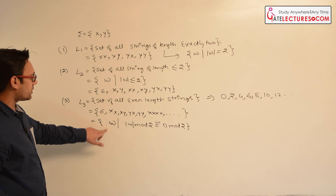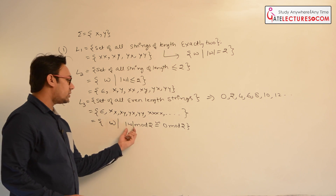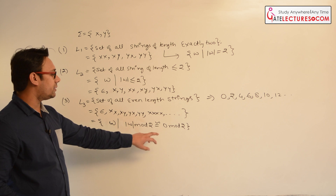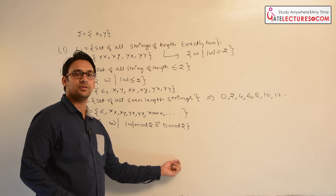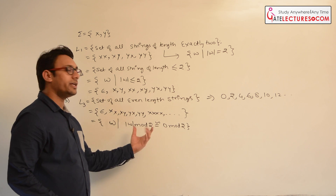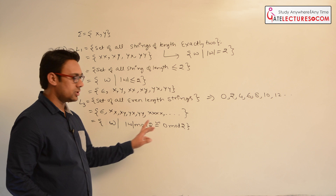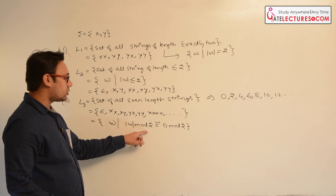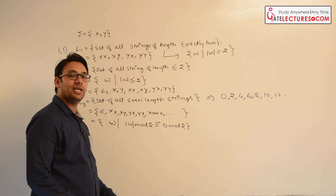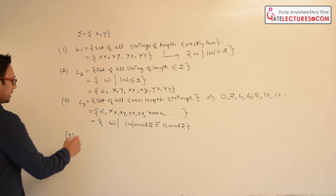What does this mean? It means the string w is such that if we divide the length of w by 2, the remainder we get is congruent to 0. So length of w mod 2 should be equivalent to 0 — meaning even length strings — because 0 mod 2 is 0, 2 mod 2 is 0, 4 mod 2 is 0, 6 mod 2 is 0. But 1 mod 2 is 1, 3 mod 2 is 1, 5 mod 2 is 1, so we get even length strings.